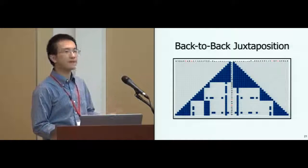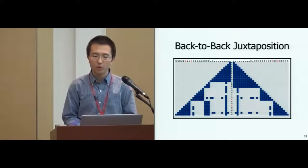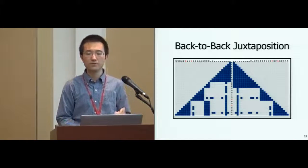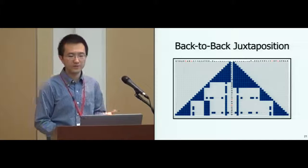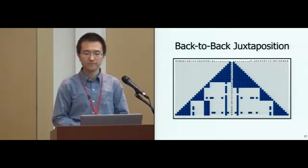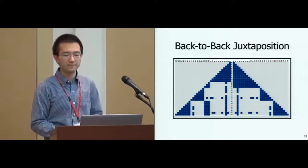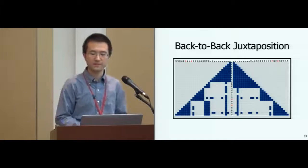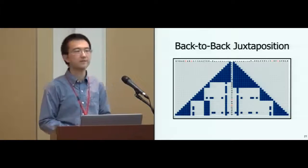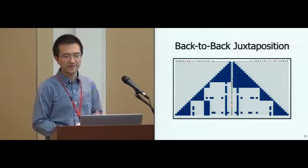One is called back-to-back juxtaposition, which reverses the order of rows or columns in one of the two matrices to form a symmetric composition. This design is motivated by human symmetric perception, which has been shown effective in computer-aided detection.